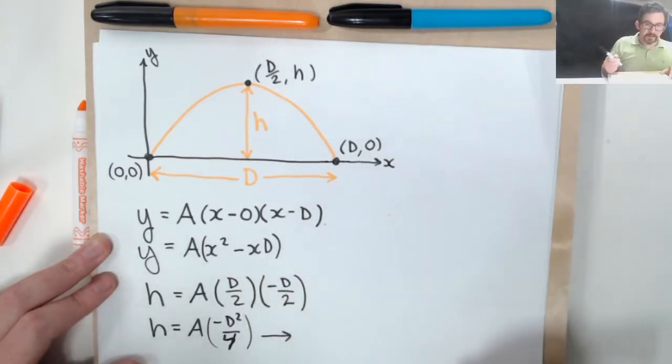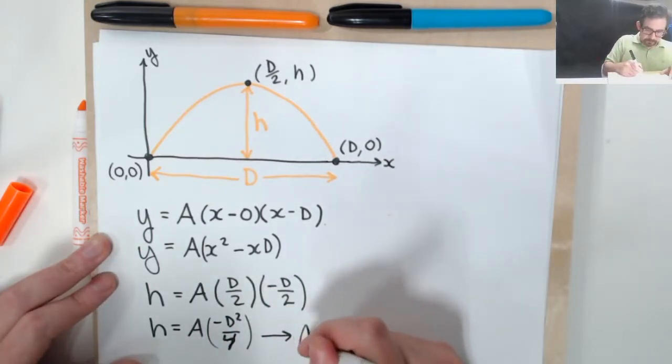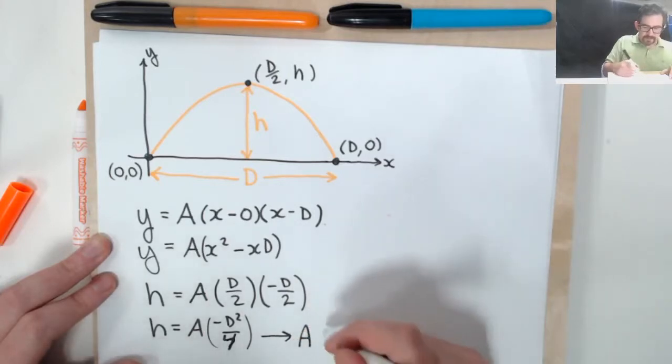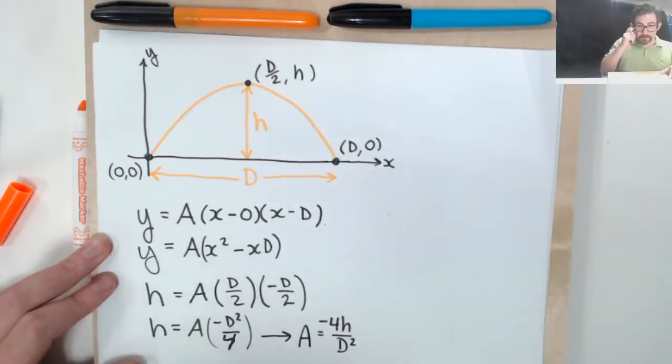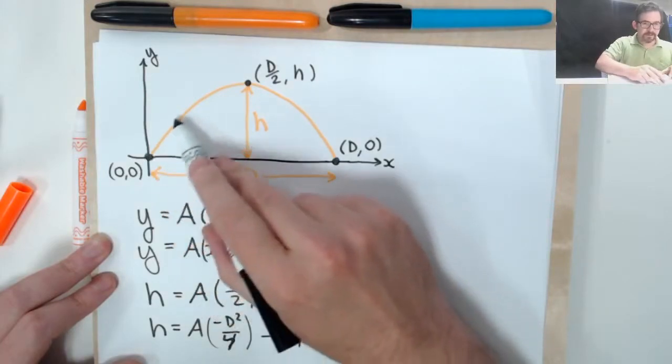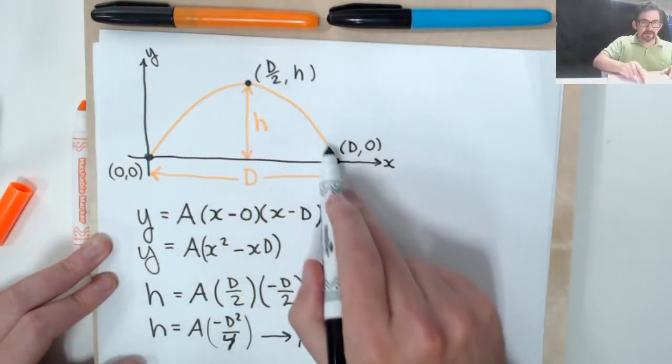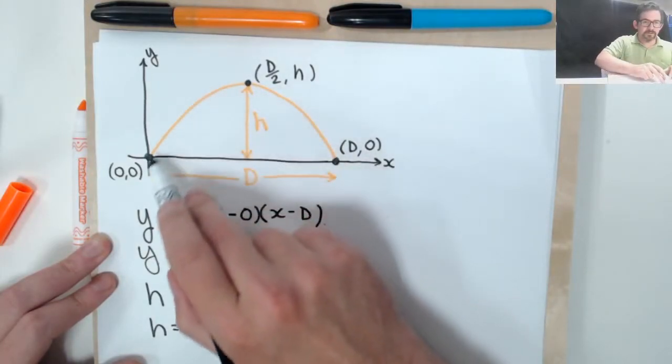So what does that mean? a has to equal, well, solving for a, I see that it must equal four h over d squared and be negative. Now, does that make sense that we're going to have a negative value for our leading coefficient in this quadratic? Well, we already saw that when we have a quadratic in standard form.